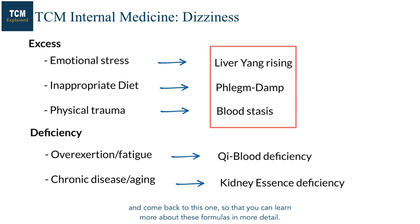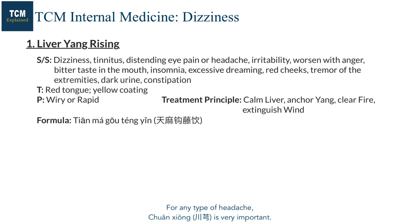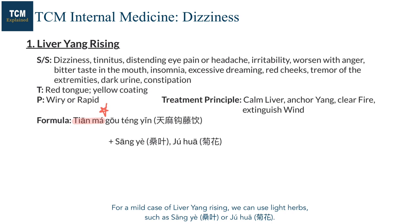When treating headache or dizziness caused by liver yang rising, we use Tianma Gouteng Yin. For any type of headache, Chuan Xiong is very important. For dizziness, Tianma is the key herb. For mild cases of liver yang rising, we can use light herbs such as Sangye or Juhua. For severe cases of liver yang rising, we can add heavy herbs such as Longgu or Zishi.